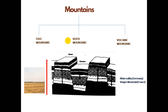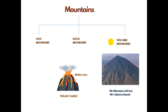Next comes block mountains. When there is a breakout in a large area, land tends to uplift and sink. Elevations formed due to this activity are called block mountains. The uplifted land is called a horst and the sinking part is called a graben. Examples of block mountains are the Rhine Valley and the Vosges mountains.